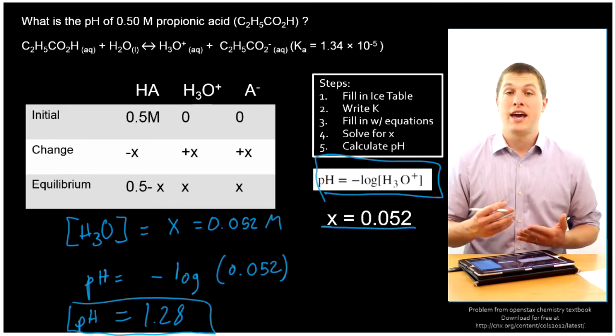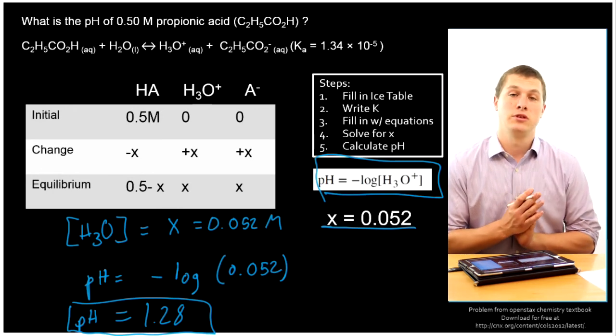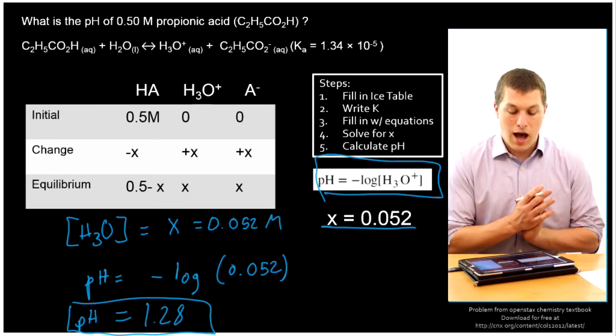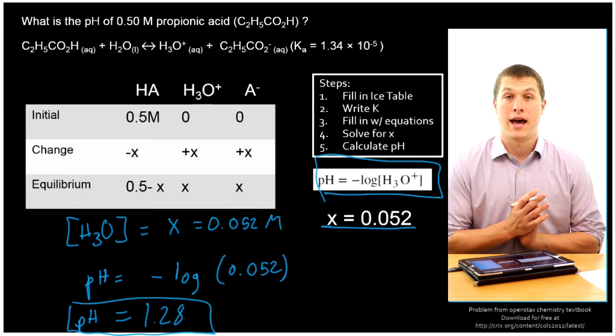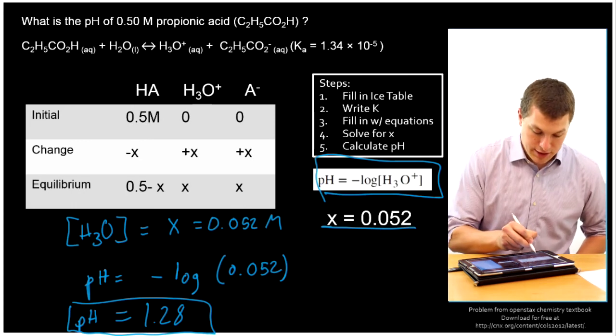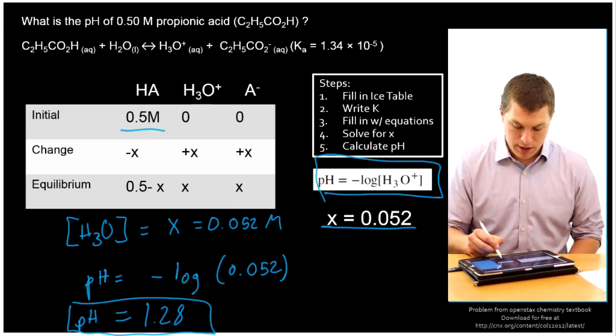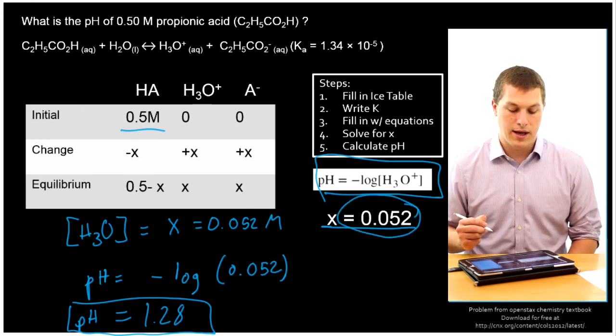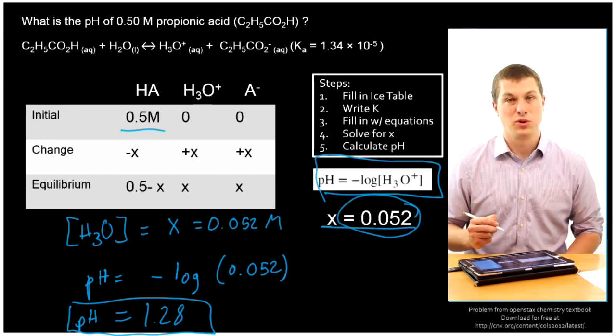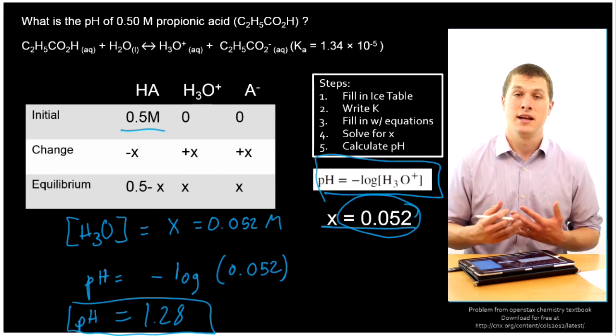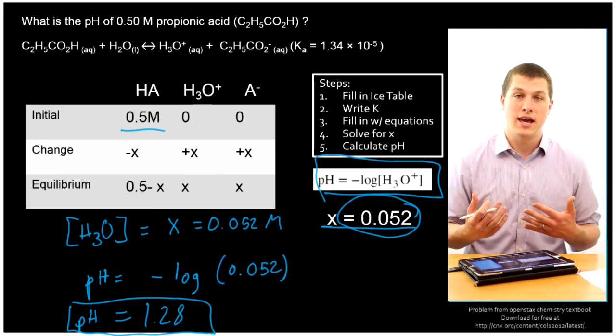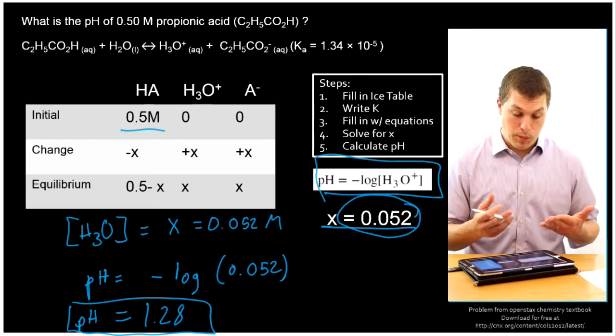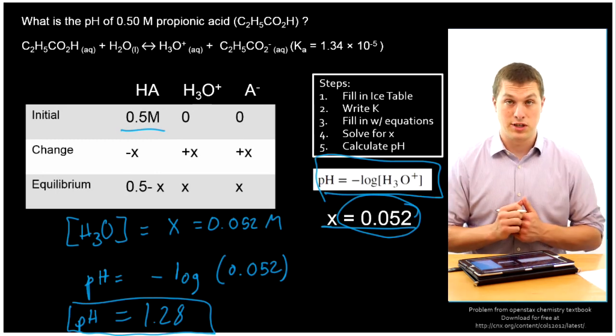So there, I got the pH for a weak acid. Remember, I had to use an equilibrium calculation here, because not all of my propionic acid dissociated. In fact, look at the initial concentration, 0.5 molar. And the concentration of my hydronium ions is 0.052. So only about 10% of that acid actually dissociated. And that's why the pH is not as low as it would be if propionic acid were a strong acid that completely dissociated.